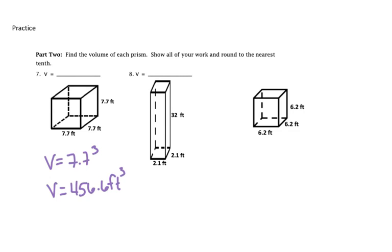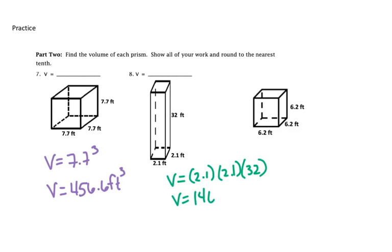In our next example, we're going to multiply. Remember, volume is length times width times height, so we're going to do 2.1 times 2.1 times 32. We multiply all three together, and our volume is 140.8 feet cubed.